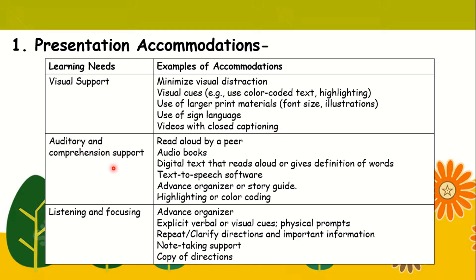Next is auditory and comprehension support. You must read aloud by a peer; audiobooks are also effective. Digital text that reads aloud or gives definition of words, text-to-speech software, advanced organizer or story guide, and highlighting or color-coding. Next is listening and focusing. Examples include the advanced organizer, explicit verbal or visual cues, physical prompts, repeat and clarify directions and important information, note-taking support, and copy of directions.